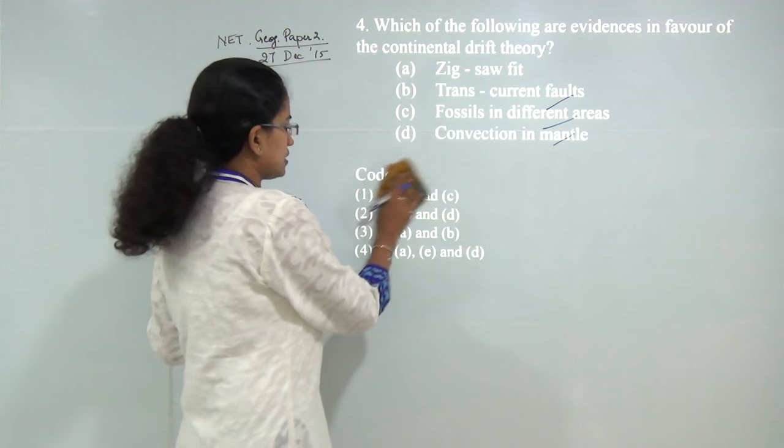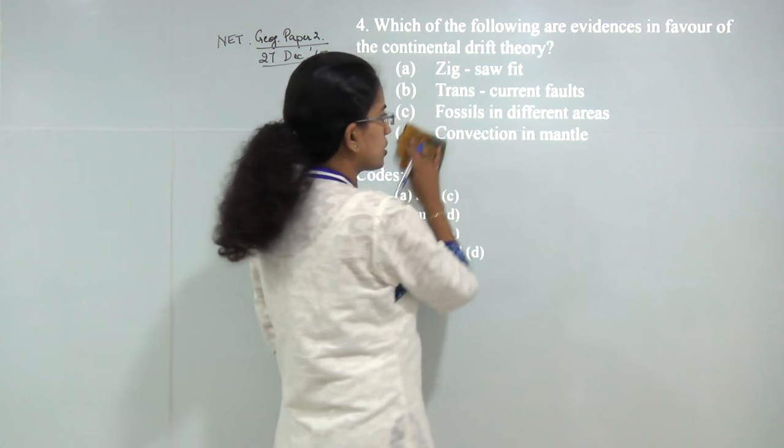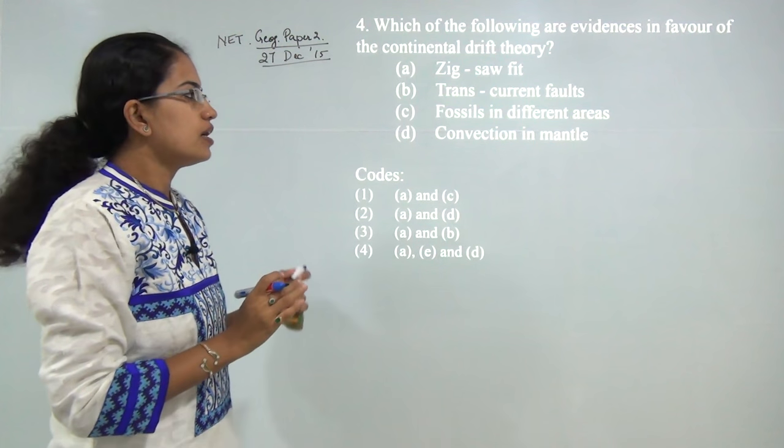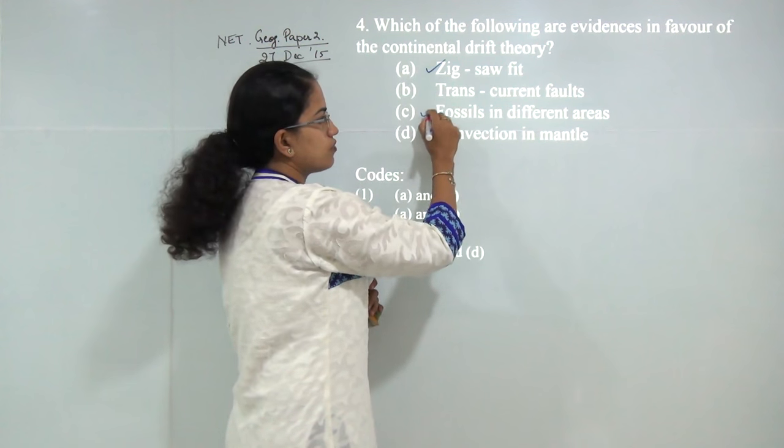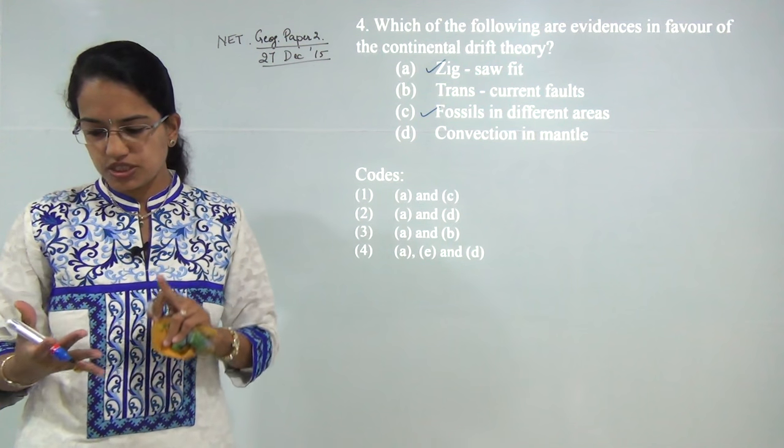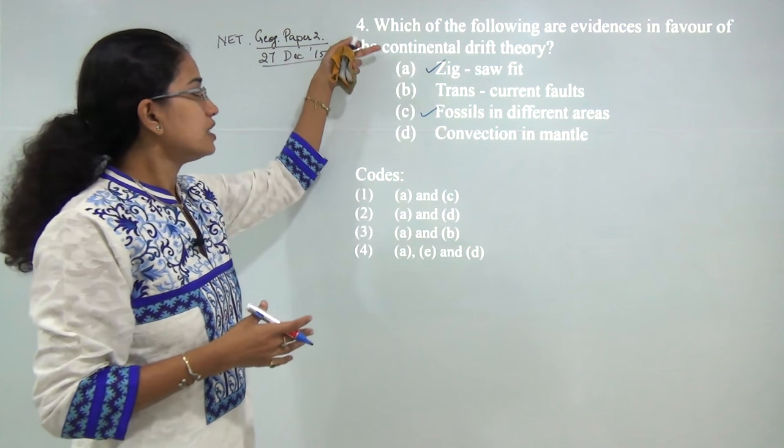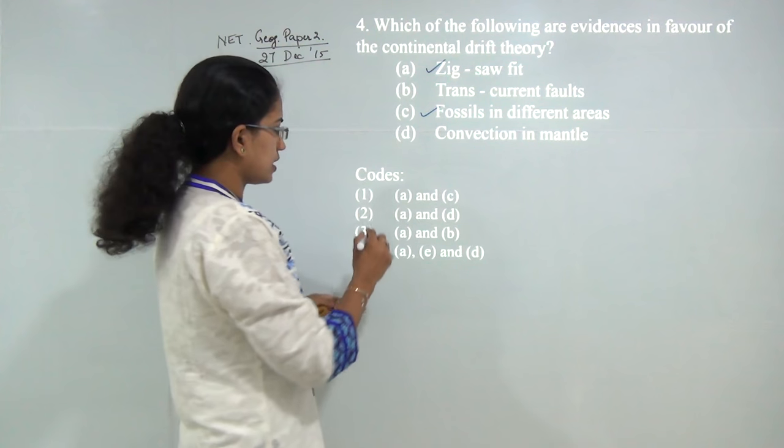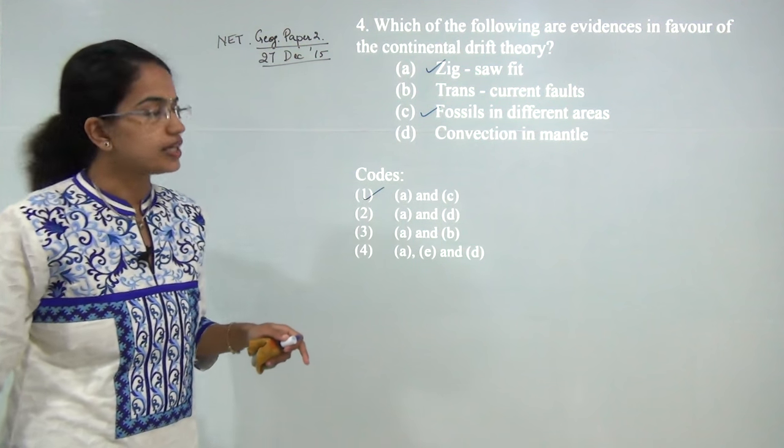Next: which of the following are evidences in favor of continental drift theory? We have covered this in detail. There are 5 basic evidences: jigsaw fit, fossils in different areas, paleoclimatic conditions, paleomagnetic conditions, and similarity in rock structure. From these 5, only 2 are available here: A and C. You can refer to the class for more details.